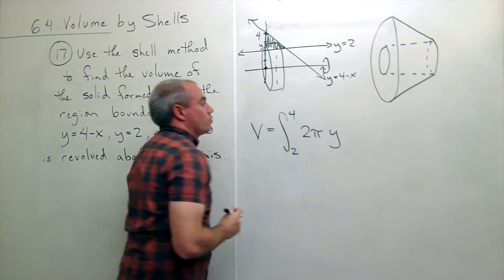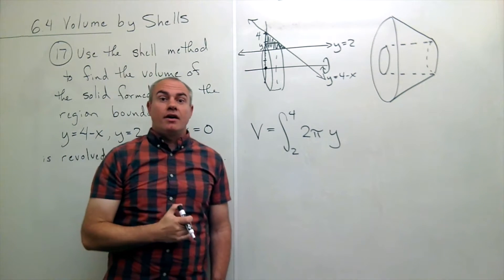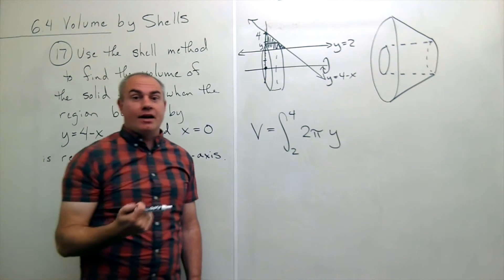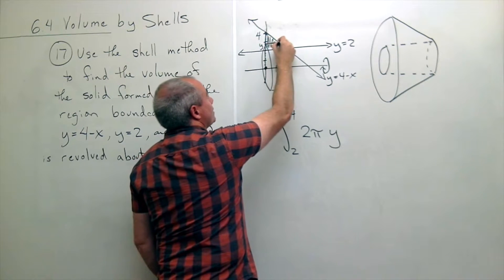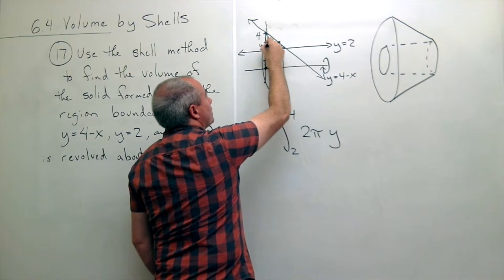The distance is y, that's the radius. And then I need the height of the typical shell. So if I'm sitting at y, the height is the top function minus the bottom function.